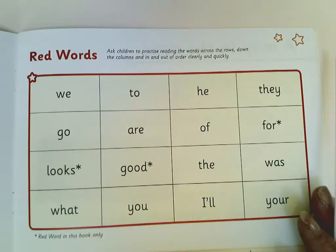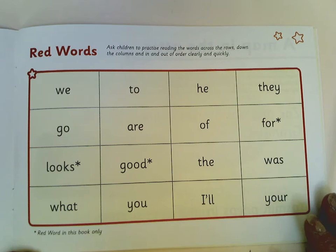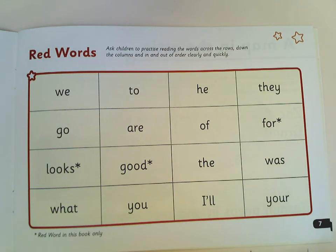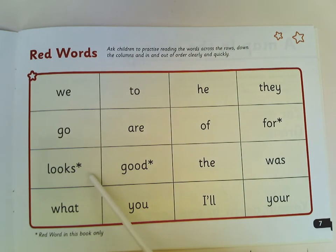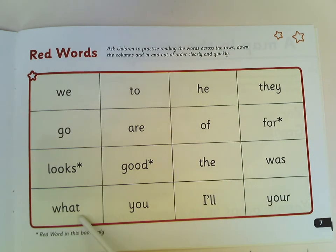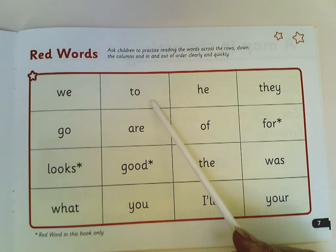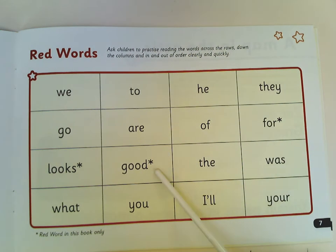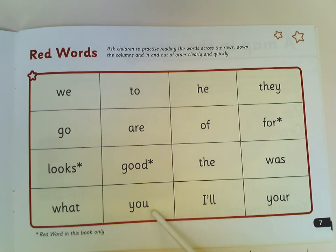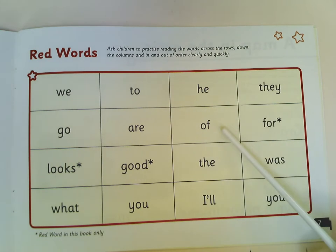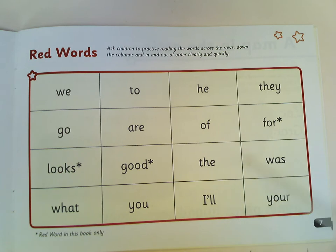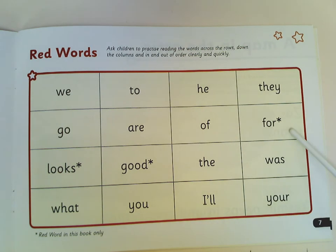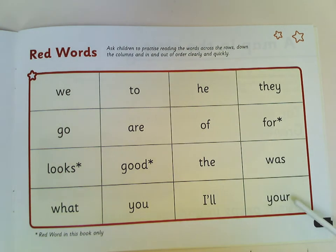Let's begin with the red words. Shall we go across or down? Let's go down then. We, go, looks, what, to, are, good, you, he, of, the, I'll, they, for, was, your.